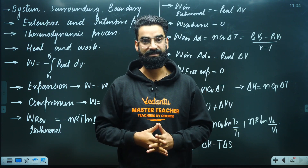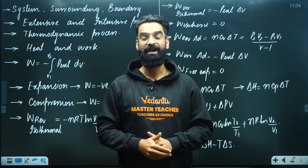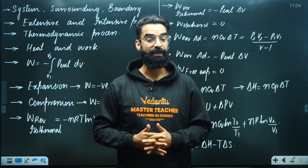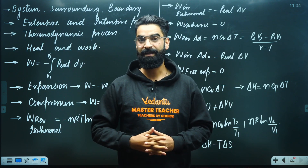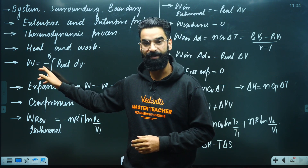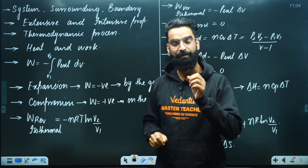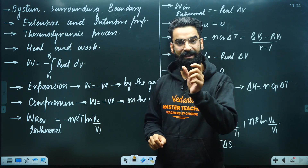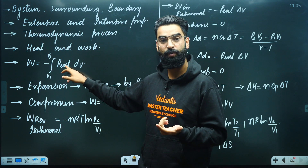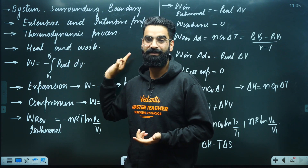Whenever there is compression of the system, work is done on the system and W is taken to be positive. The general expression to calculate work is: W = −∫(V1 to V2) P_external dV. Depending on whether the process is reversible or irreversible — if reversible, P_external is replaced by P_gas; if irreversible, external pressure is constant and comes outside the integral, giving the simple formula: W = −P_external ΔV.